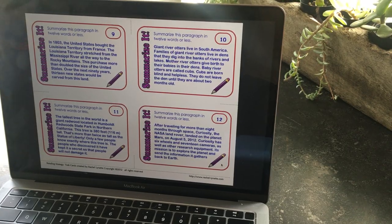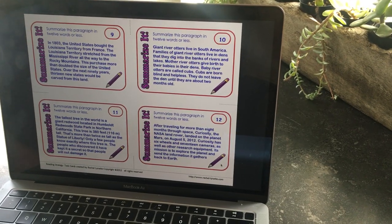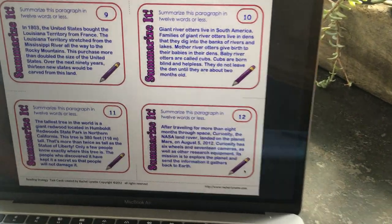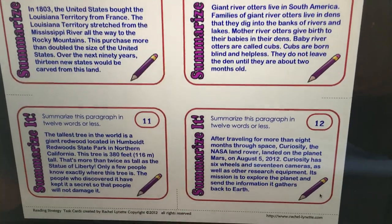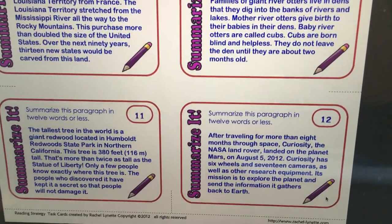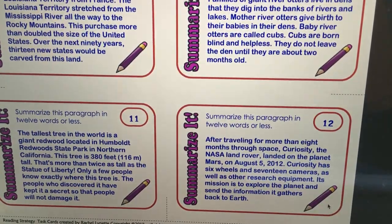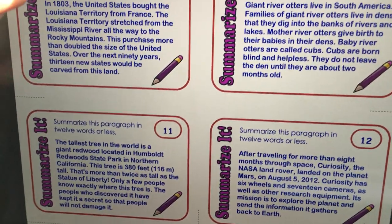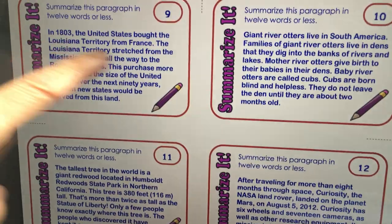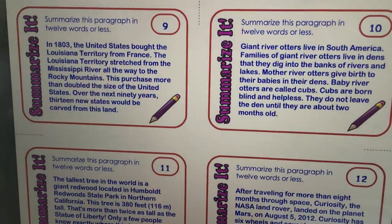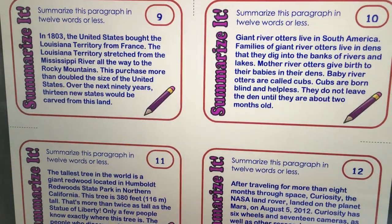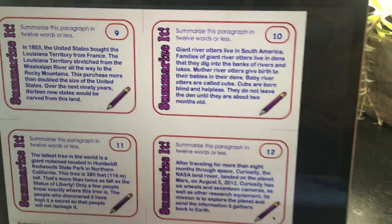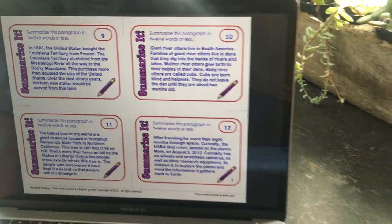Your next cards are Summarize It, which we all need work on. You're going to read the passage and then summarize it in a certain amount of words. It looks like you have to summarize all of these passages in 12 words or less, making sure you have the main ideas.